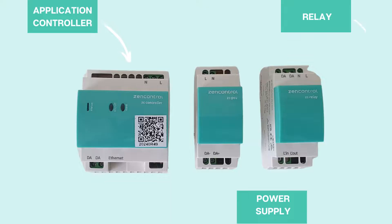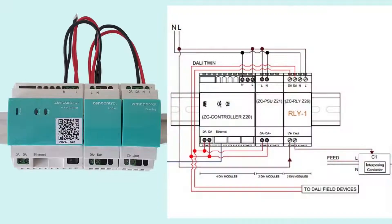An application controller will always require a DALI power supply. For this example we will also show a DALI relay. The controller is 4 DIN modules width and requires a live and neutral connection into the terminals on the top. The DALI power supply is 2 DIN modules width and also requires live and neutral terminations. If using a DALI relay to control a non-DALI load, the DALI relay, also 2 DIN modules width, can be looped into the live and neutral terminations.